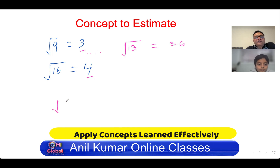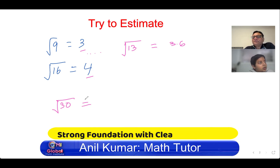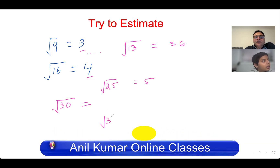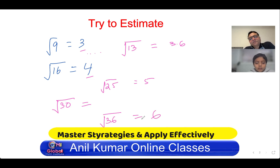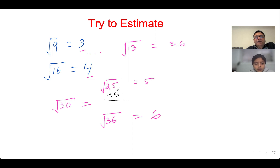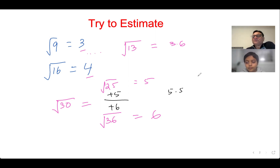Now let's estimate the value of square root of 30. The square root of 25 is 5, and square root of 36 is 6. So 30 is almost in the center between 25 and 36. So you would estimate square root of 30 as about 5.5, right? You get the idea — almost in the center. That is how we're going to estimate. Is the concept clear? Yes, perfect.